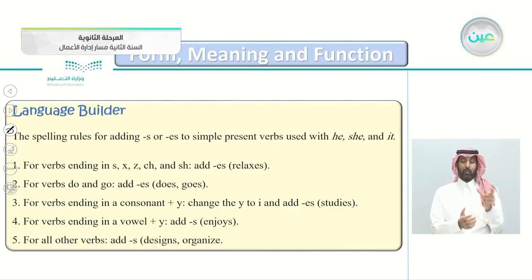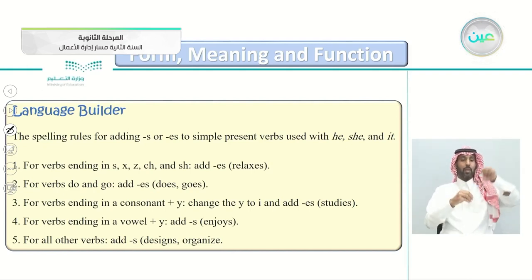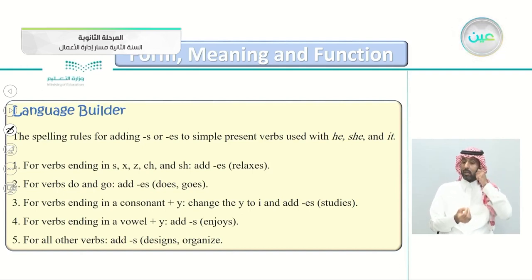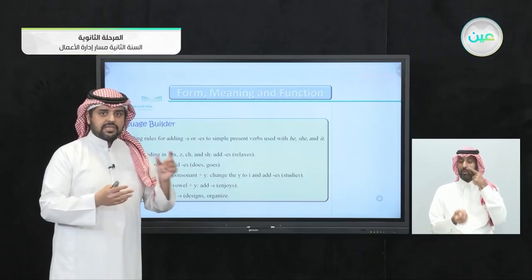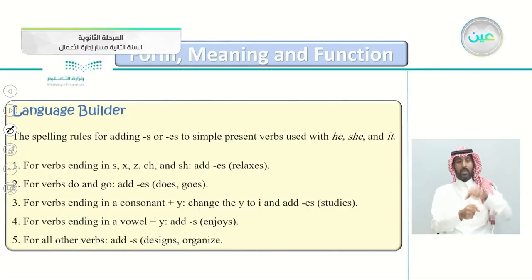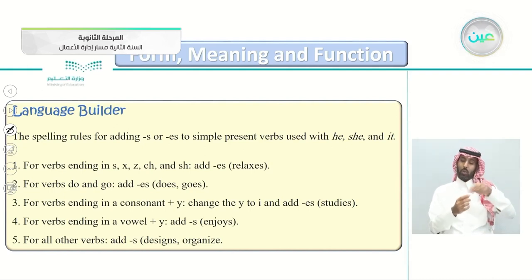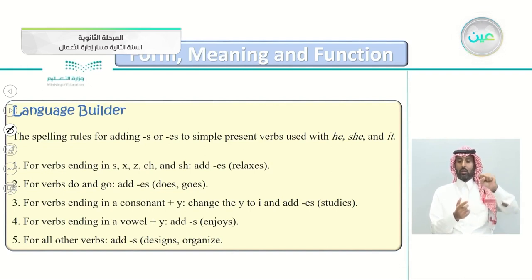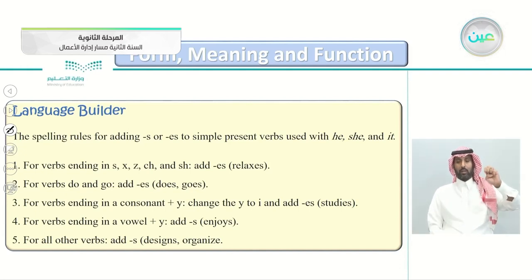Here's a language builder with spelling rules for adding 's' or 'es' to simple present verbs used with he, she, and it. Rule one: for verbs ending in s, x, z, ch, or sh, we add 'es.' For example, 'relax' becomes 'relaxes,' 'box' becomes 'boxes.'